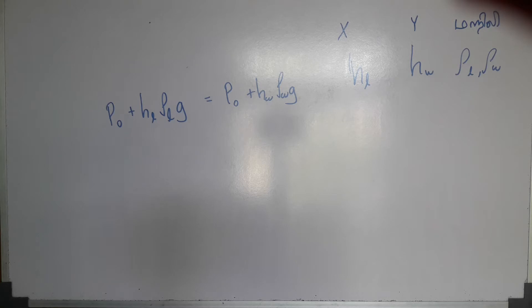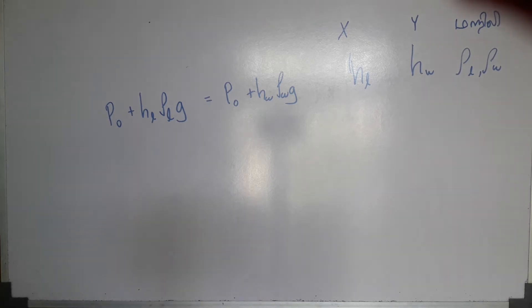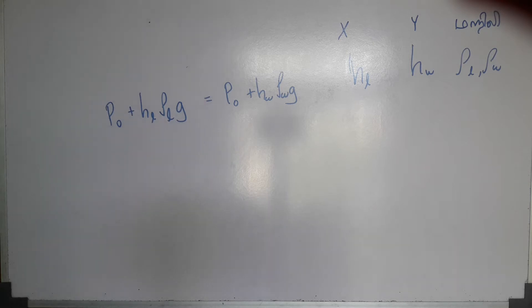We are going to see the next part. Now we will discuss the four stages of P0 plus HL-Royal G plus P0 plus HW-Row G. Now we will discuss the three stages.